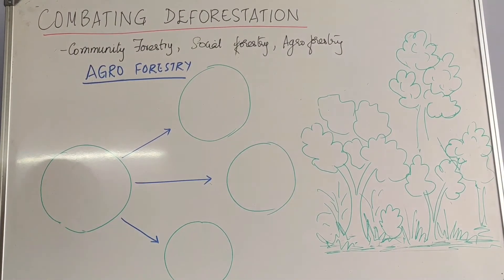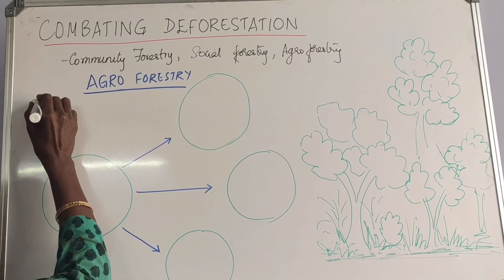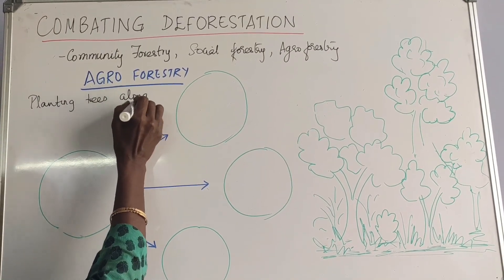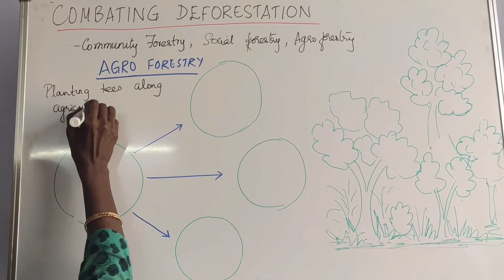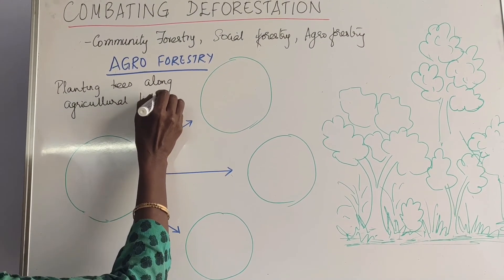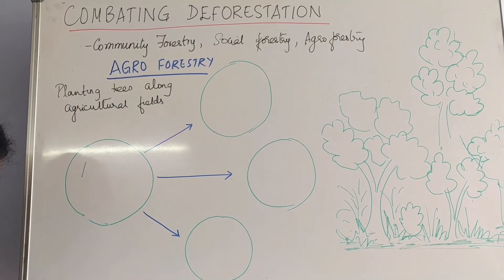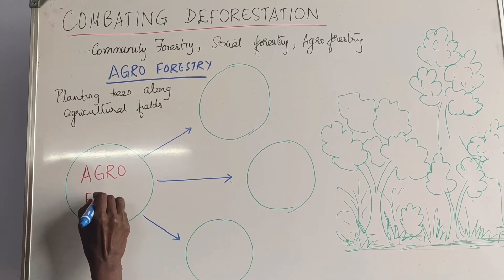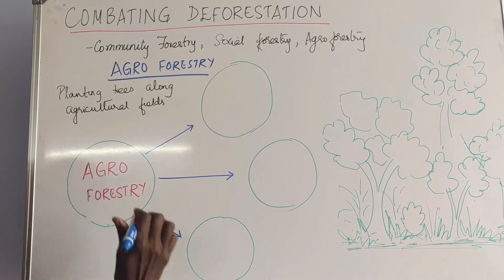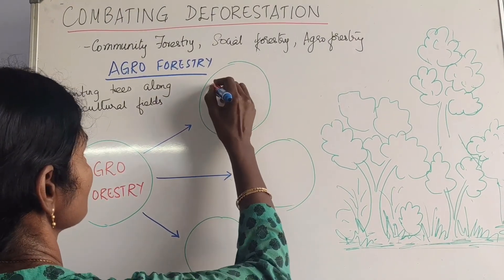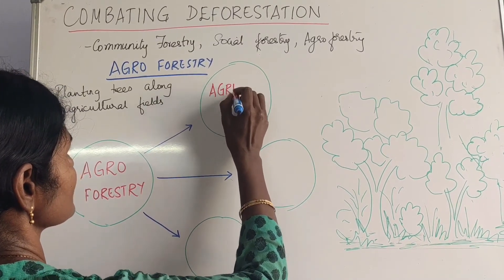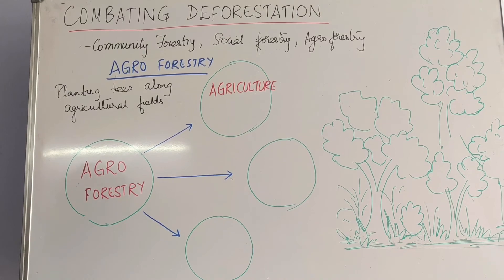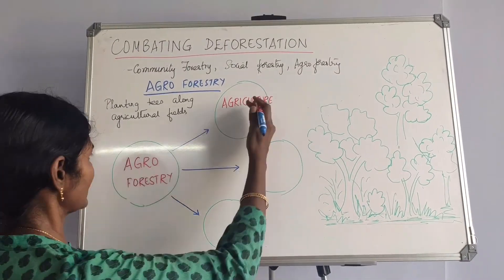Next, we move on to agroforestry. From the word 'agro,' agroforestry is nothing but planting trees along agricultural fields. There are three dimensions to agroforestry: first, it improves agriculture — planting trees acts like windbreaks, avoiding soil erosion and preserving the soil. Second, livestock is benefited because it provides fodder for the cattle.